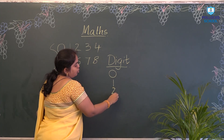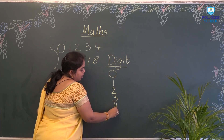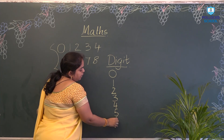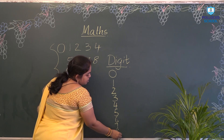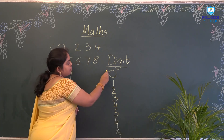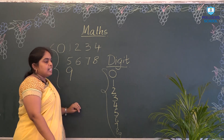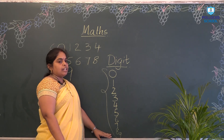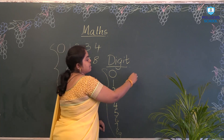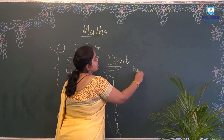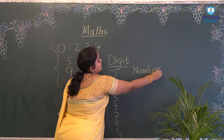The digits are 0, 1, 2, 3, 4, 5, 6, 7, 8, and 9. From 0 to 9, we will call them digits. After 9, the numbers we write will be called numbers with 2 digits.